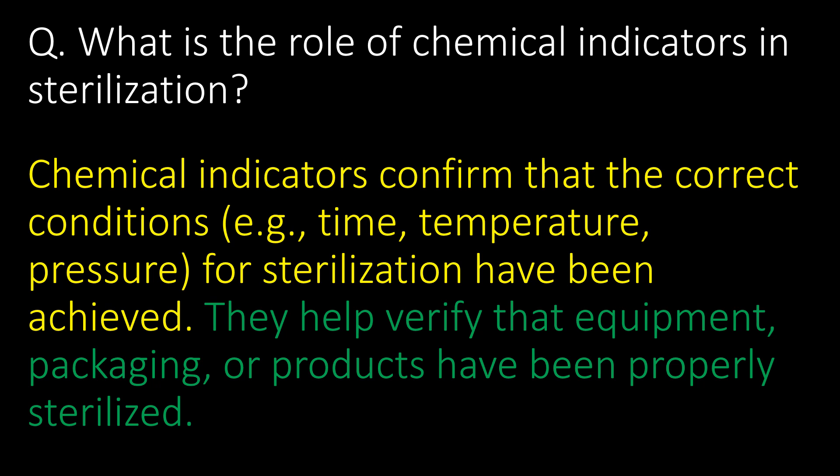What is the role of chemical indicators in sterilization? Chemical indicators confirm that the correct conditions — for example, time, temperature, and pressure — for sterilization have been achieved. They help to verify that equipment, packaging, or product have been properly sterilized.